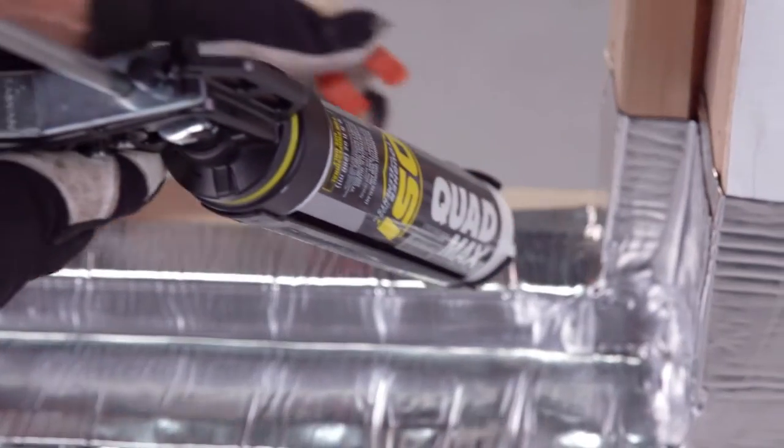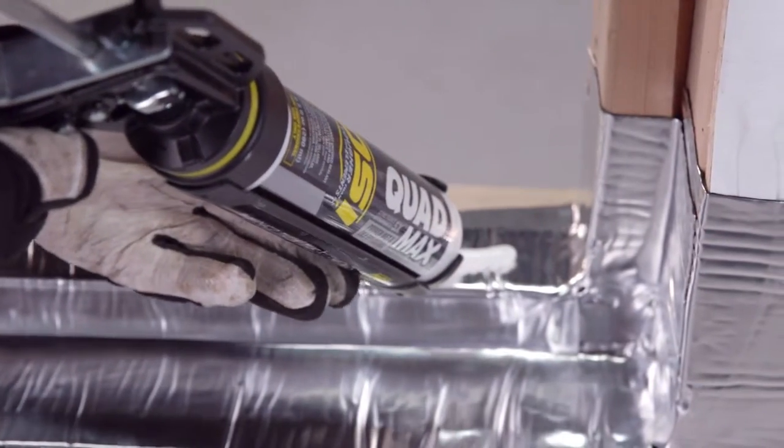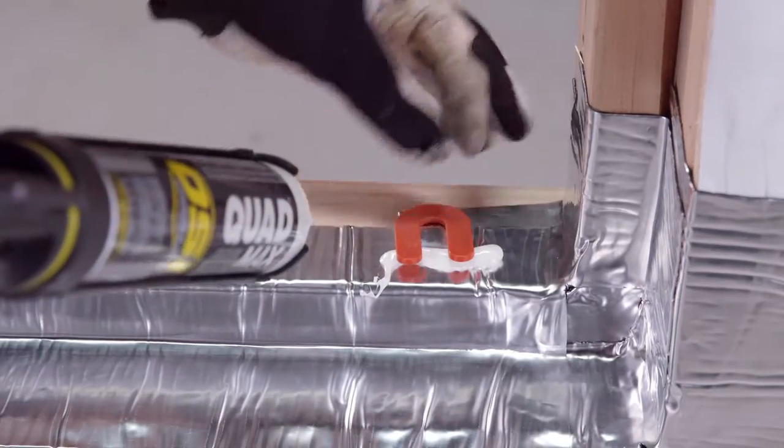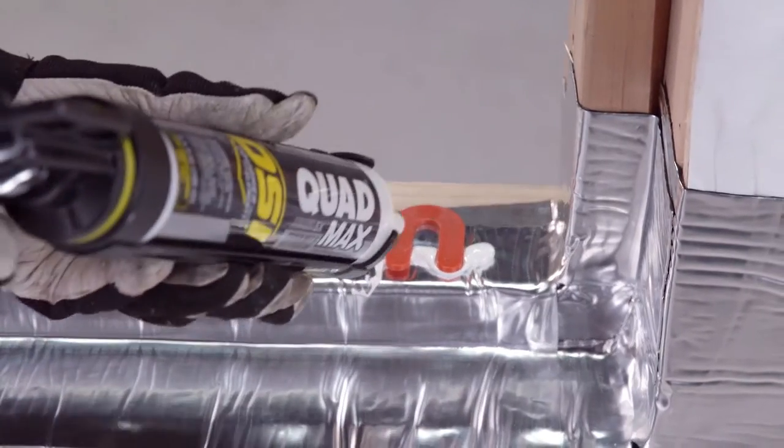Once they are level, seal the shims onto the sill using OSI Quad Max. Always follow shim schedules and positionings from the window manufacturer's guidelines.